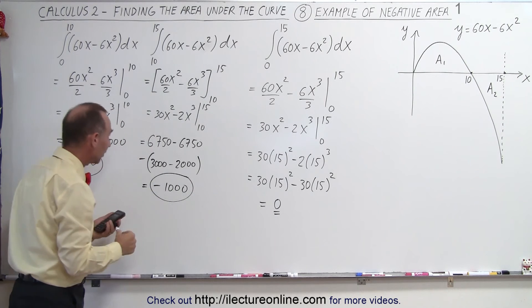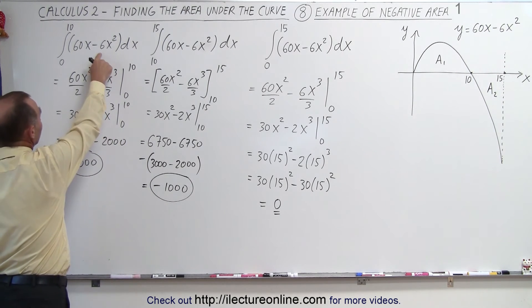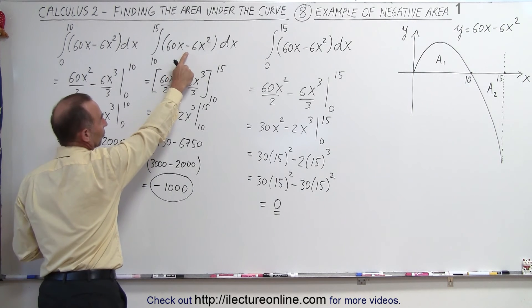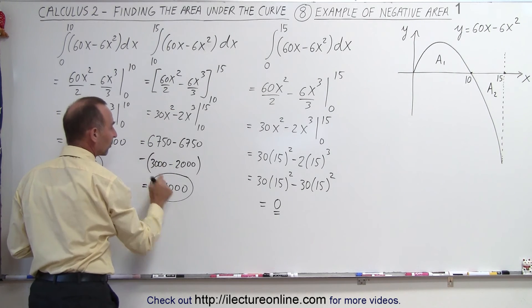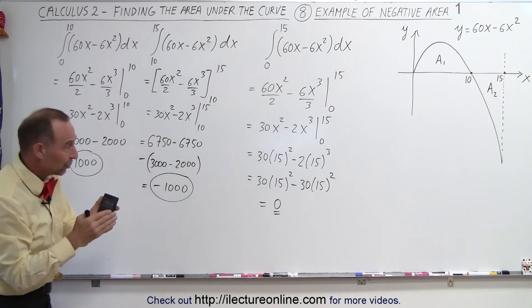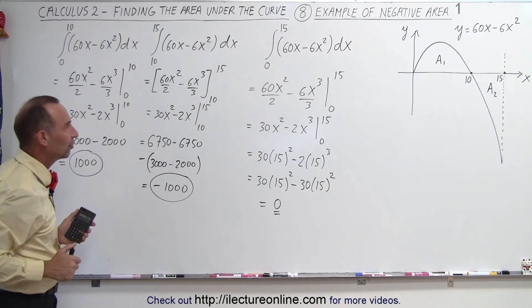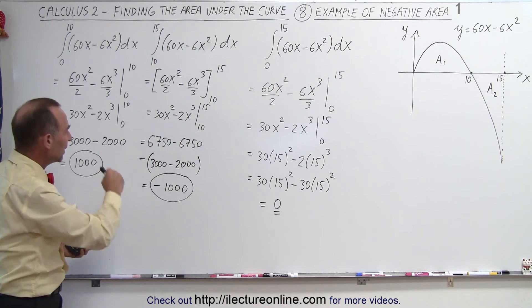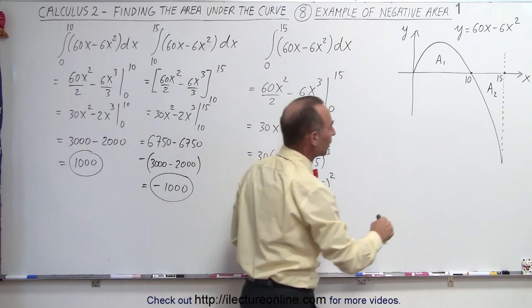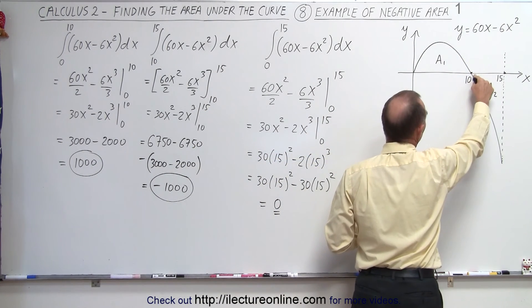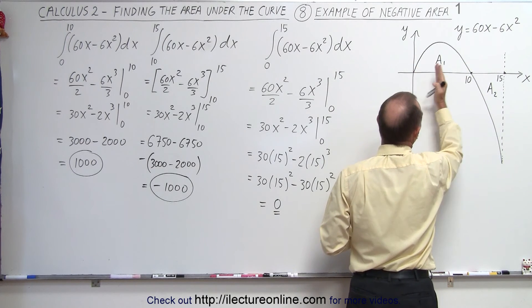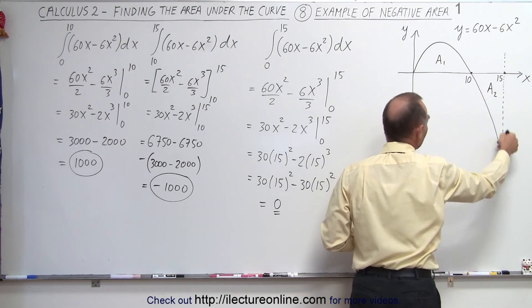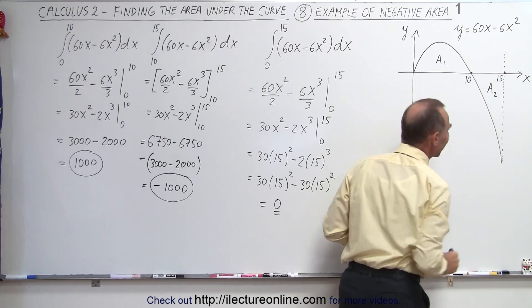And sure enough, we realize now that A1, which is defined by this integral right here, is equal to 1,000. And A2, which is defined by this integral right here, becomes minus 1,000. And when you add the two together, you do indeed get 0. So you can see here that you always have to be careful about positive and negative area, that you have to understand where the curve crosses the x-axis. You have to understand that you need to put the limits from there to there if you want to just get the positive area. And from there to there when you just want to get the negative area.